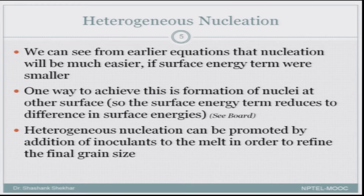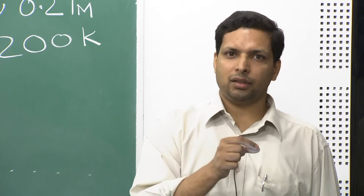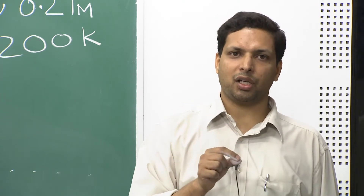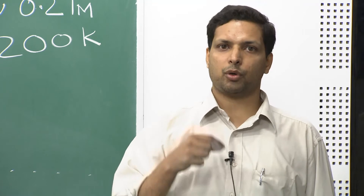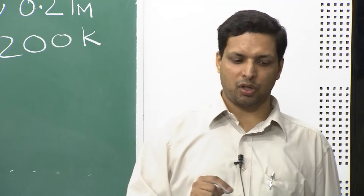Recall that r* and ΔG* are proportional to the surface energy term γ — in fact, to the square and cube of the surface energy term. If γ_SL increases, r* becomes very large and the probability of nucleation decreases. On the other hand, if you decrease γ_SL, r* drops, ΔG* drops, the probability of nucleation becomes large, and that is where heterogeneous nucleation comes into picture.